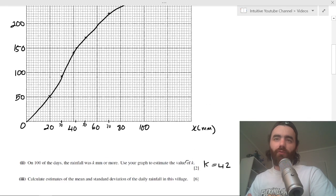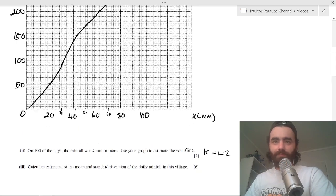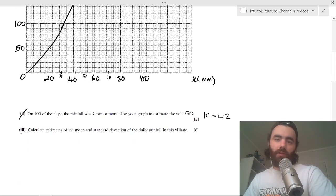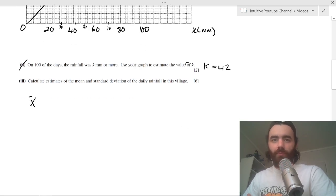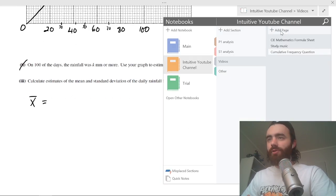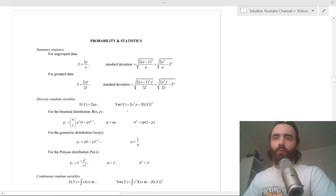So we can say our k value equals 42. That's just reading off the graph, the top 100 days. Then, like a lot of these, it asks you to estimate the mean and standard deviation of the daily rainfall in the village. So it wants you to find the mean of x.